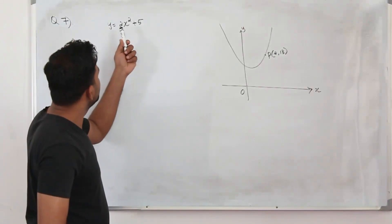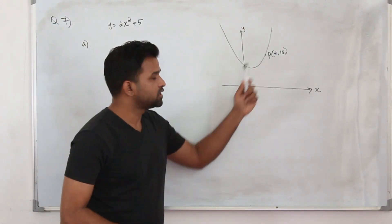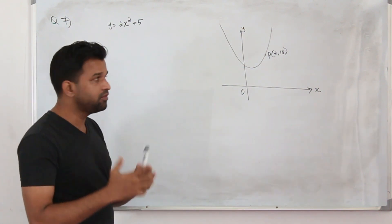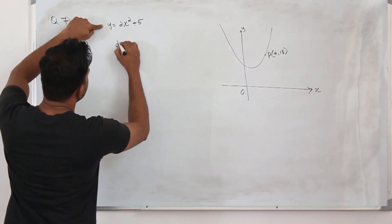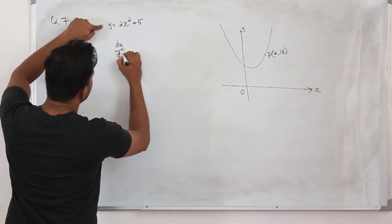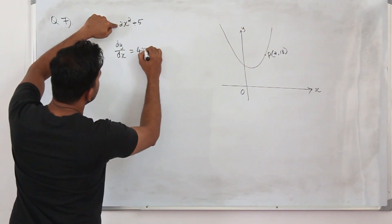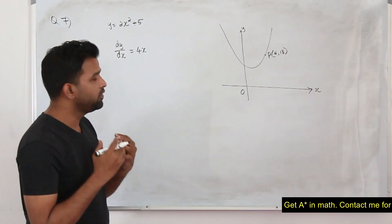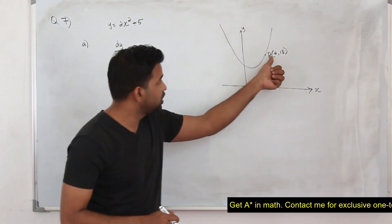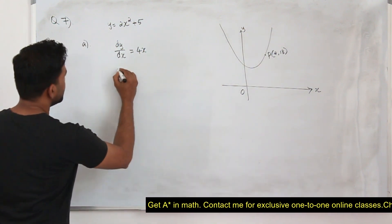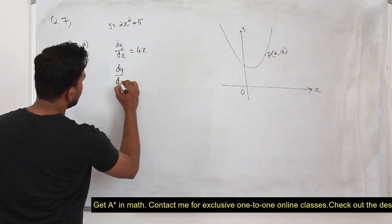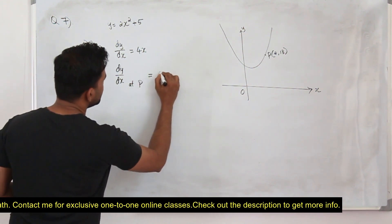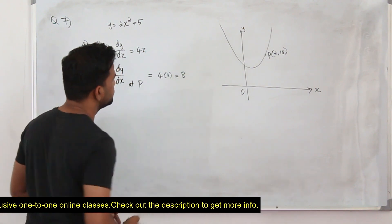In Part A, they want you to find the gradient of this function at this particular point. Whenever they ask you to find the gradient of any function, differentiate the function with respect to x. So it will be 2 times 2, giving 4x, and the constant becomes 0. This is called the gradient function. But if you want the gradient value at a particular point, take the x coordinate and substitute. So the gradient at point P is 4 times 2, which is 8.